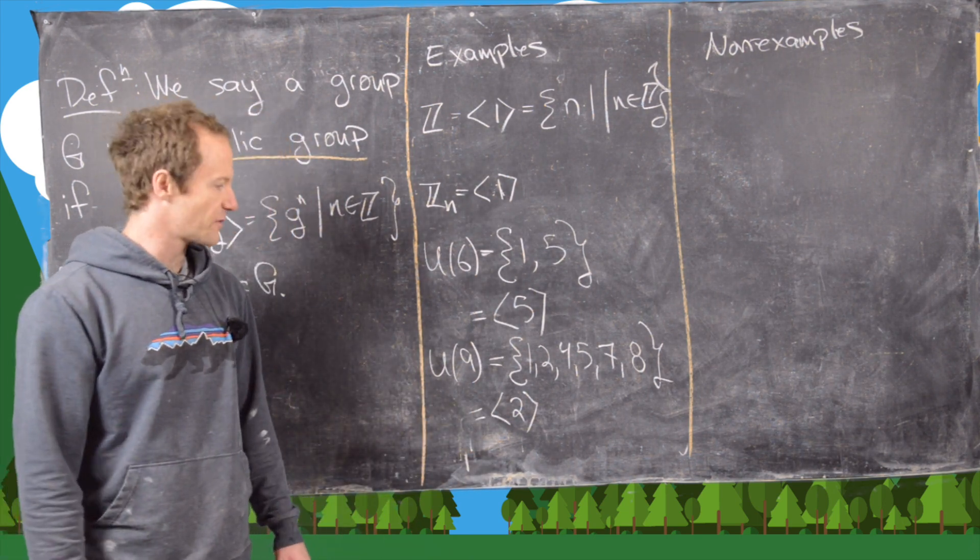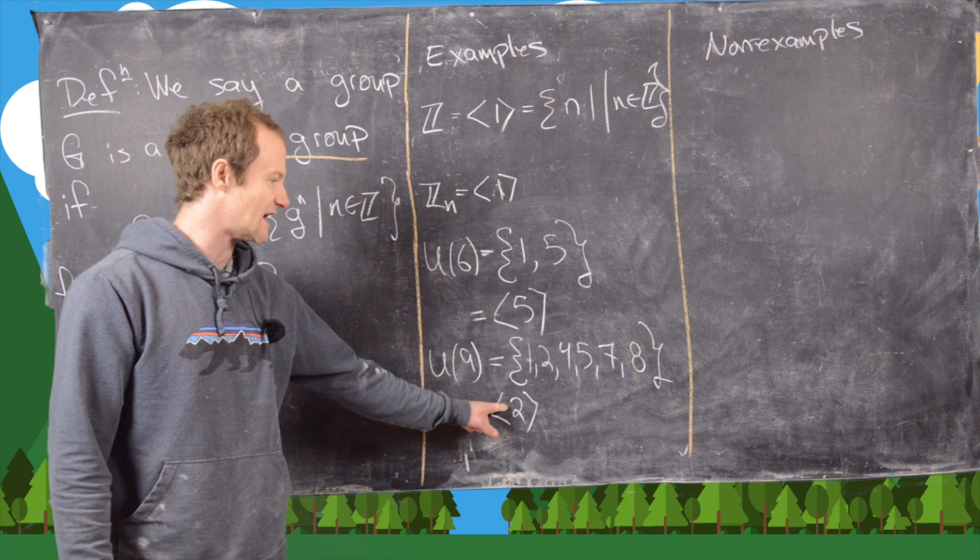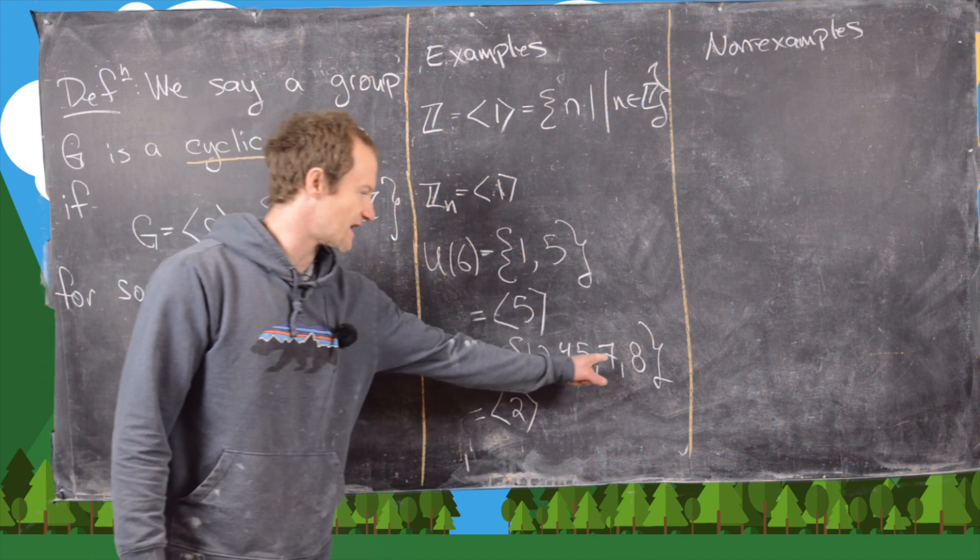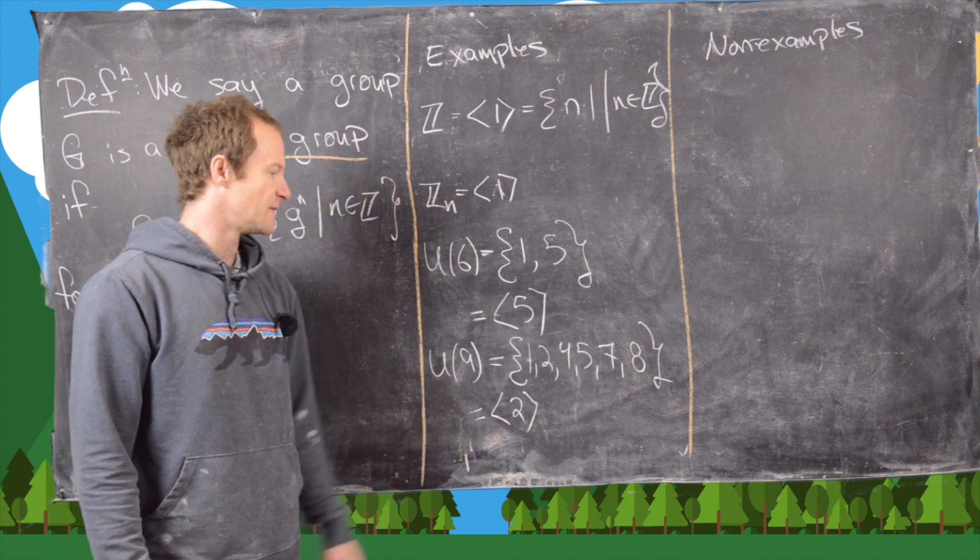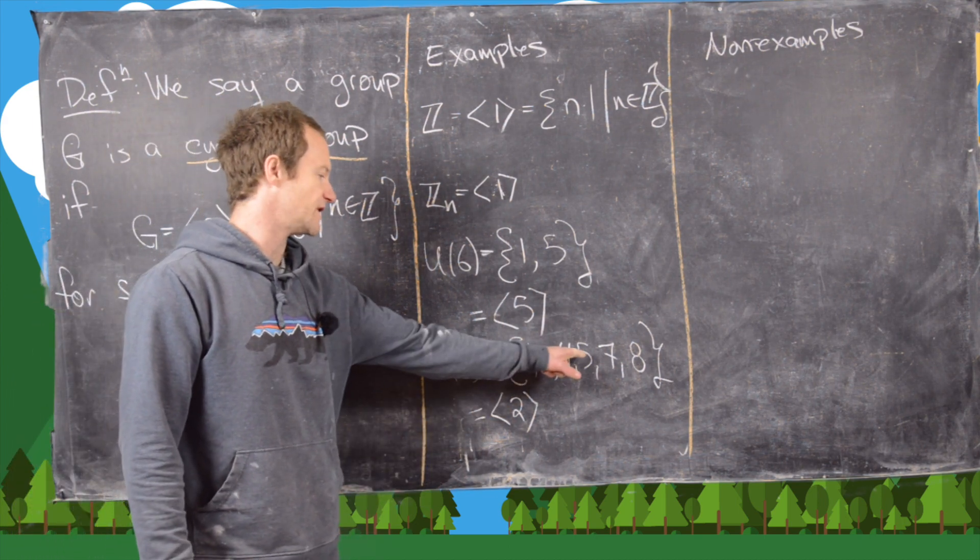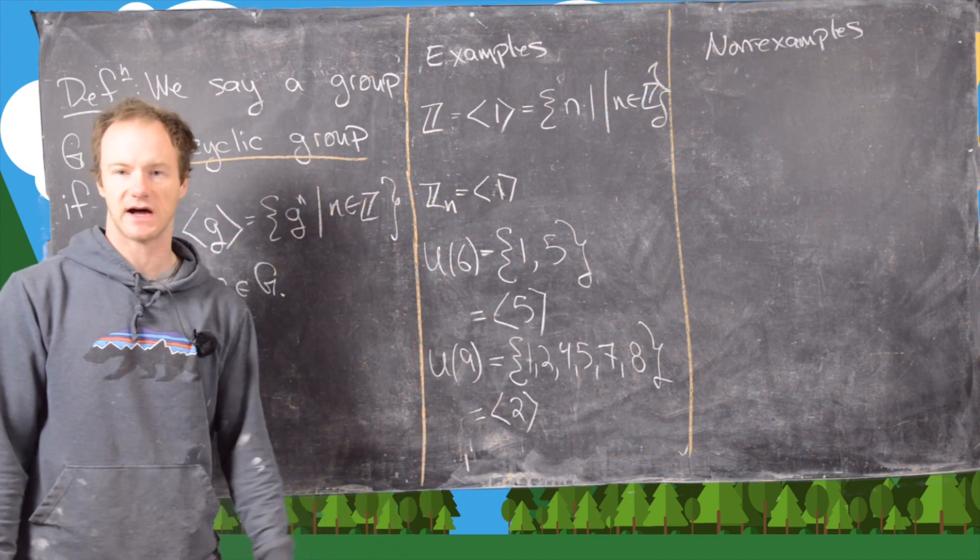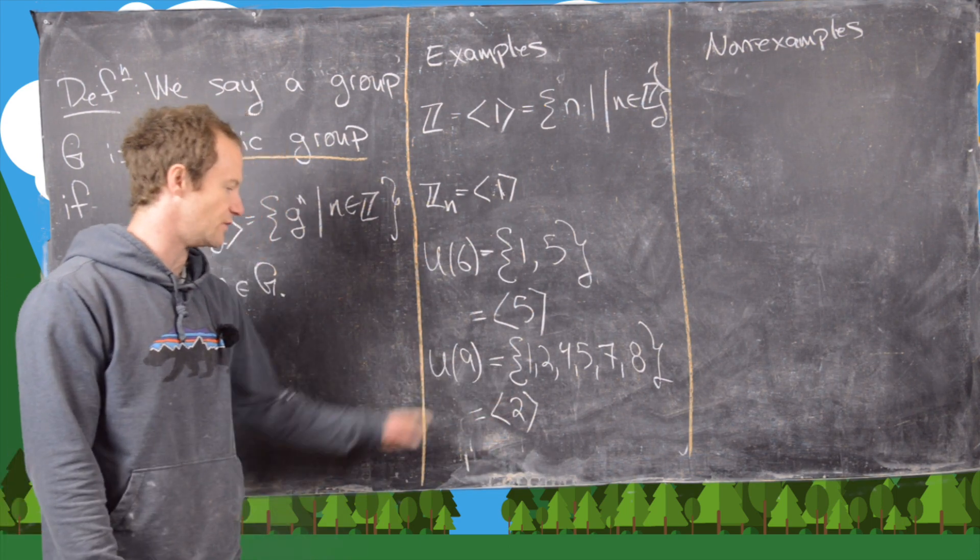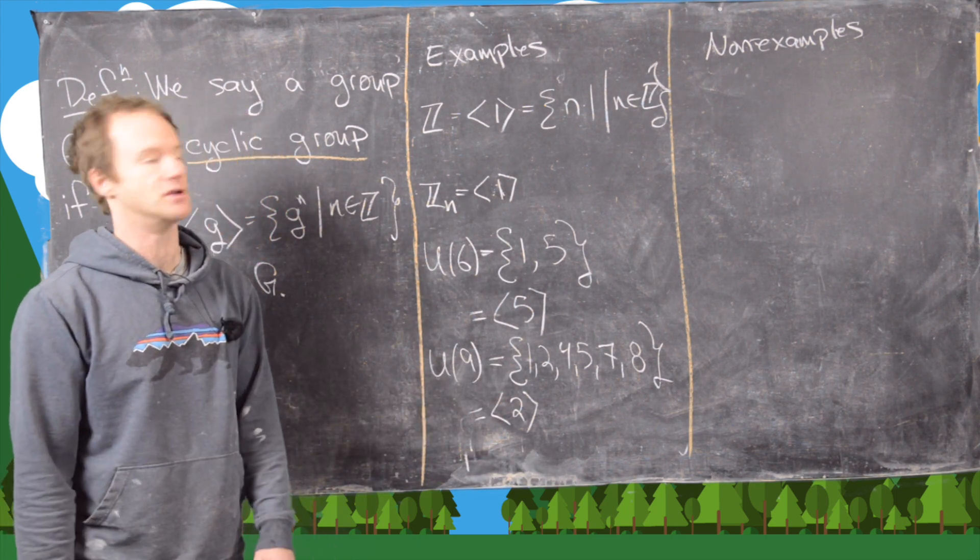Then two to the fourth power is equal to 16, but 16 is the same thing as seven mod nine. And then finally two to the fifth power is 32, but 32 is the same thing as five mod nine. So we have achieved every element of U(9) from powers of two.